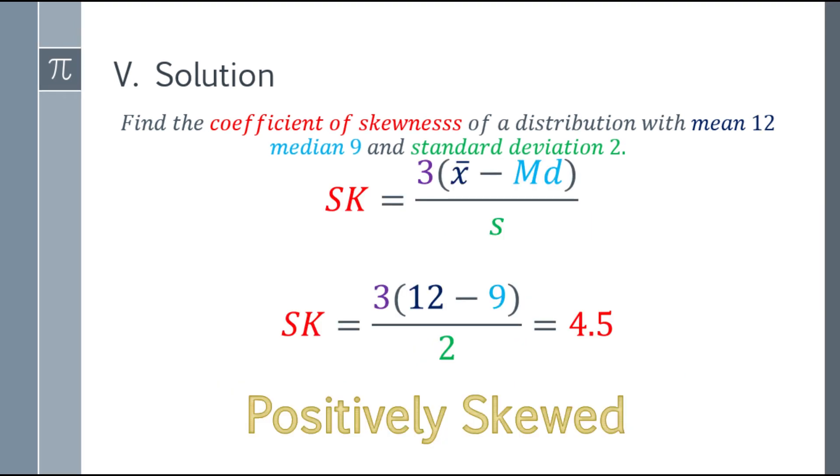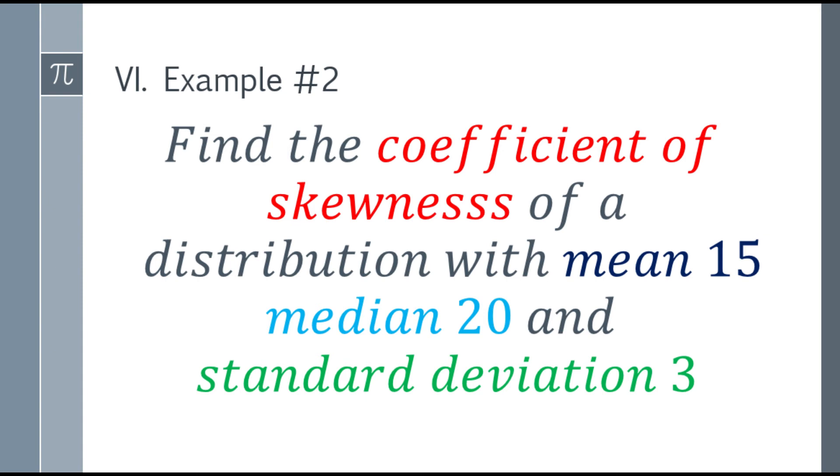Next one. Example number 2. Find the coefficient of skewness of a distribution with mean 15, median 20, and standard deviation 3.